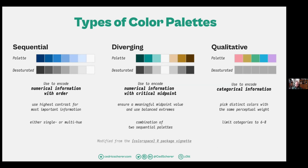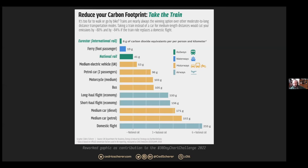The last type is qualitative color palettes, used to encode categorical information. Take care that colors are distinct and have the same perceptual weight — if desaturated, they should look like the same gray — unless you want to highlight specific categories. Usually limit your colors to six to eight categories; at some point it gets hard to distinguish. For the carbon footprint bar chart, I came up with a version that groups data into modes of transportation: waterways, motorways, and airways. The three with the lowest footprint are waterways and railways, and all others are motorways and airways. I flipped the chart — the message is: take the train — and added annotations so you see that a domestic flight has about six times the carbon footprint of national rail.